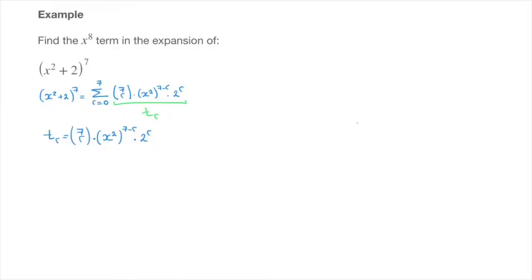Doing so leads to the following: this equals the binomial coefficient 7 choose r, times x to the power of 2 times 7 minus r, times 2 to the power of r.